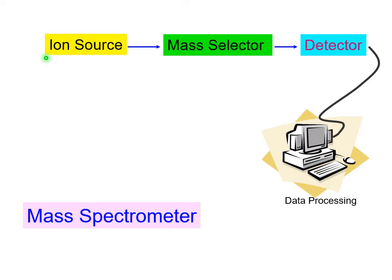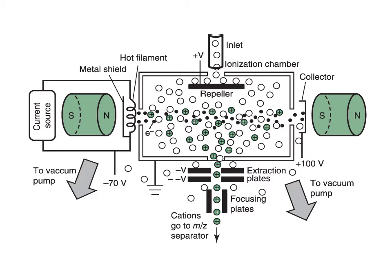So how can we make ions out of our molecules? When we talk about mass spectrometry, we need ions, not molecules, to put them into the mass selector and detect them. The simplest way is so-called electron impact.